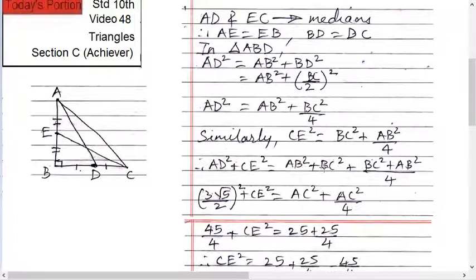But what is AB square plus BC square? That is AC square. And what is BC square plus AB square? Again AC square. So AC square upon 4.